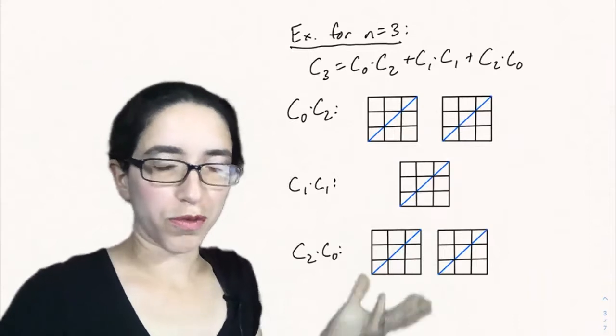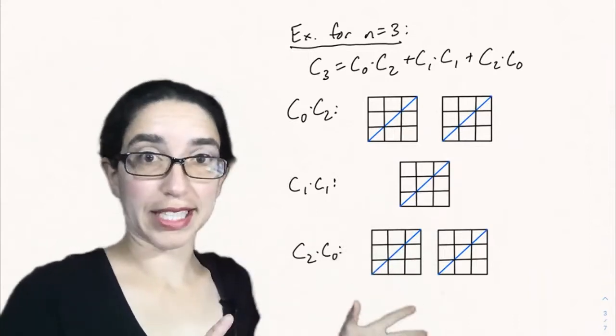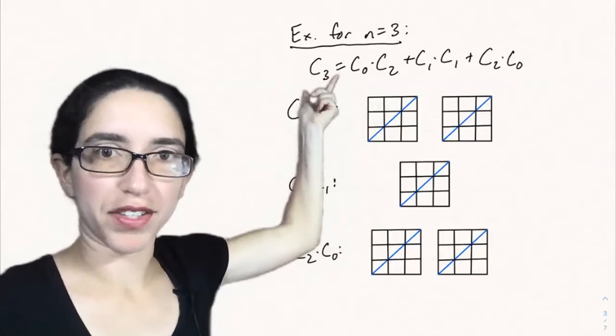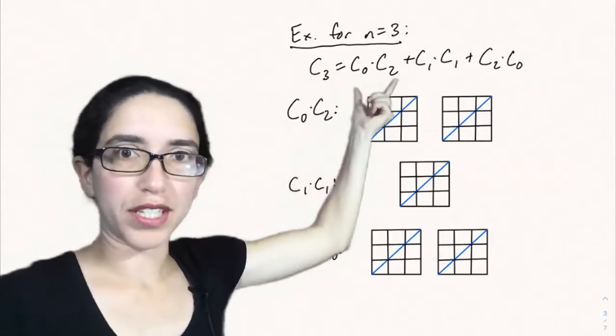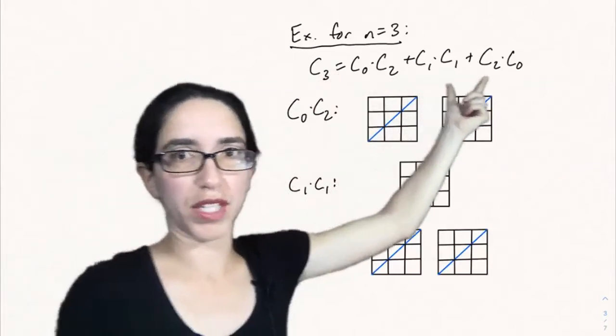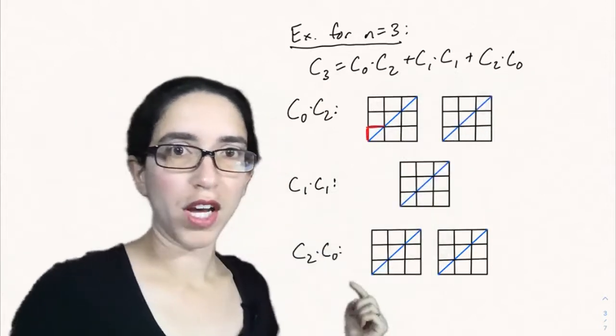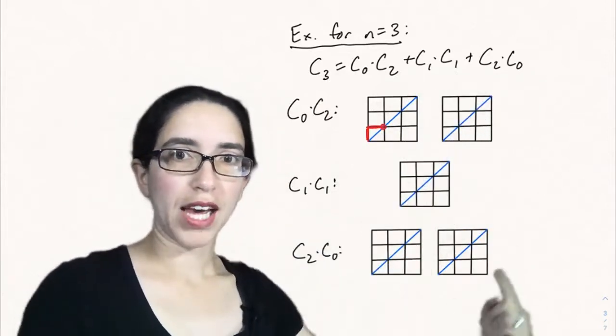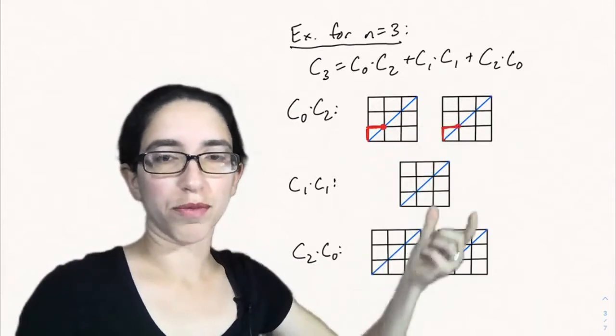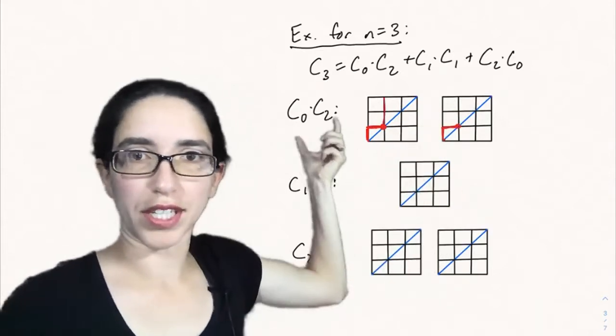Let's see this proof written out more visually as an example. Why is C3, the number of Dyck paths of height 3, equal to C0 times C2 plus C1 times C1 plus C2 times C0? We know that C3 is 5, and we're going to sort those five Dyck paths into subclasses that correspond to these products.